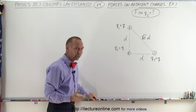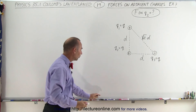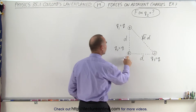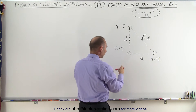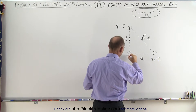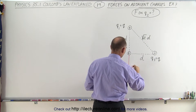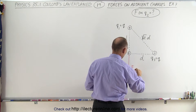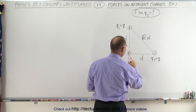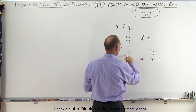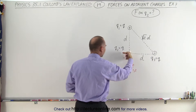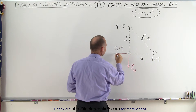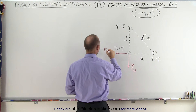The best thing to do always is to draw the vectors first. So the force on Q2 due to the presence of Q1 will be down in this direction — it's a force of repulsion. So this is F between 1 and 2. And then the force between Q3 and Q2 — again, it's a force of repulsion. Q3 will push against Q2 in this direction. So this will be F between 2 and 3.